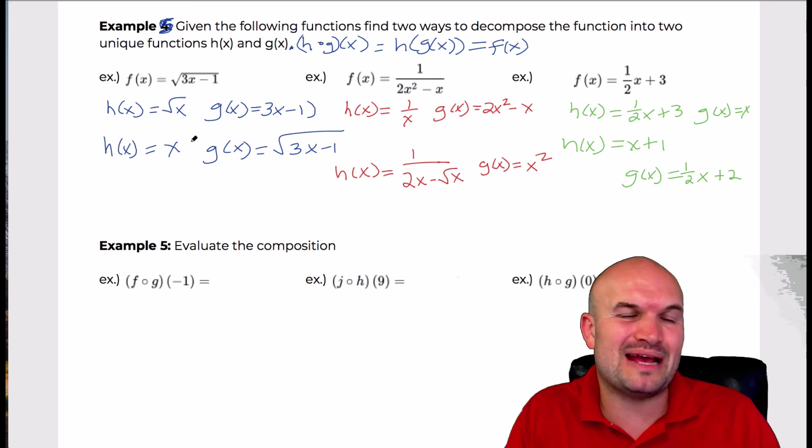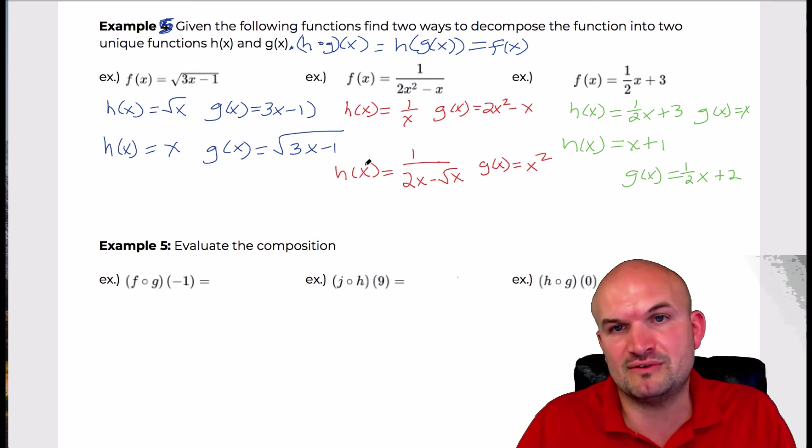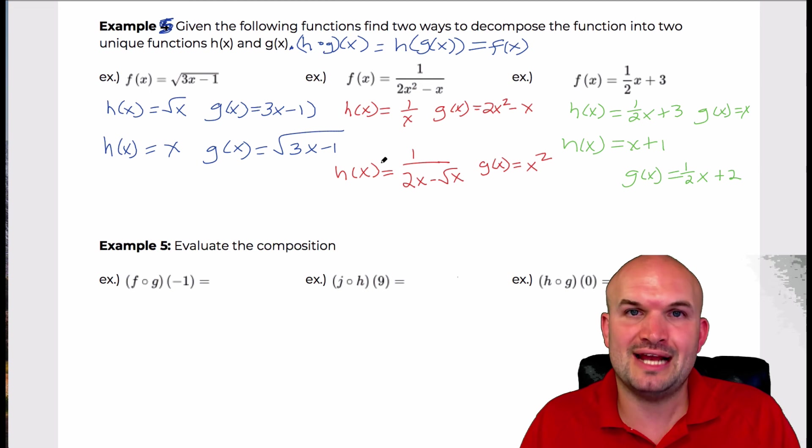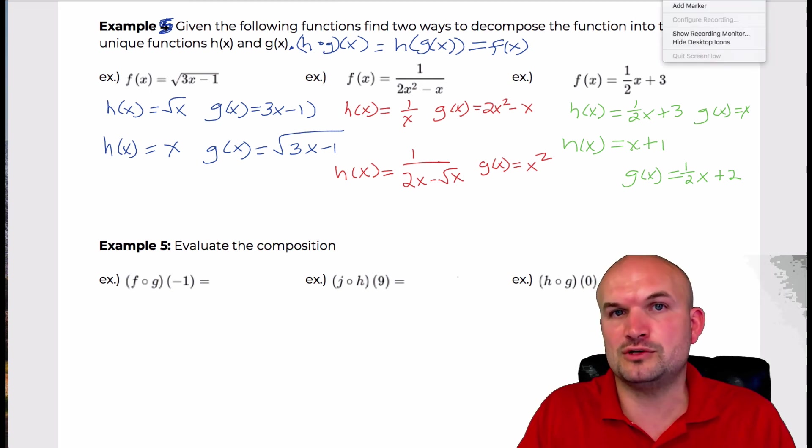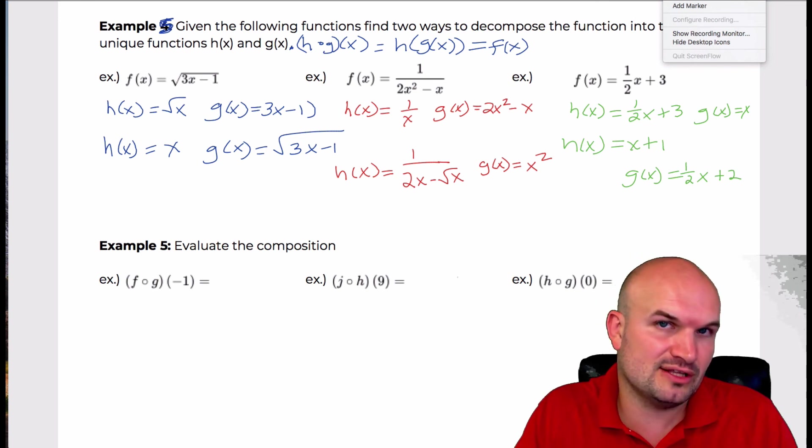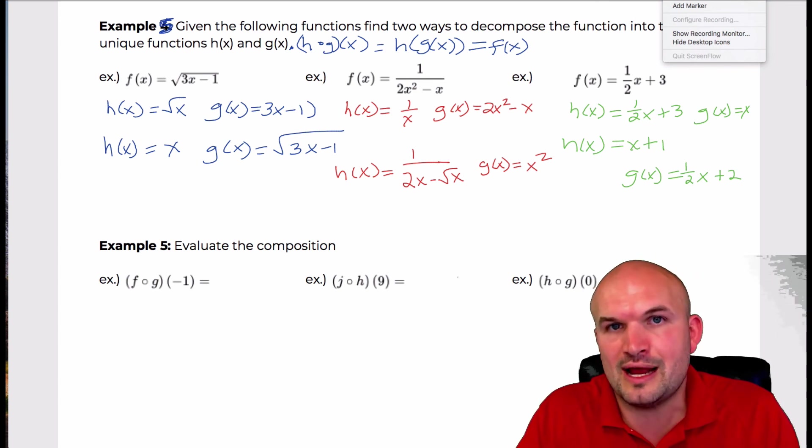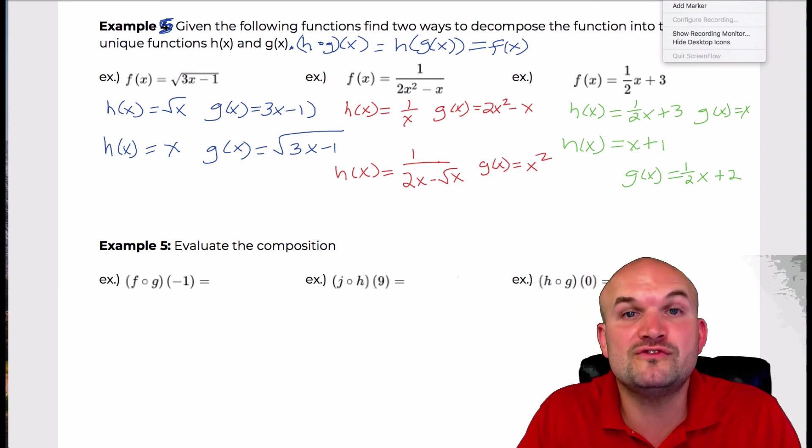Okay, so that's kind of your basic idea here of example number 5. We're basically just looking at a function as a composition of two or more functions and then identifying what those two possible functions could be. And that's really what we're doing because there's infinitely many options. Just looking at what are some possible two functions that you could do to obtain your f of x.